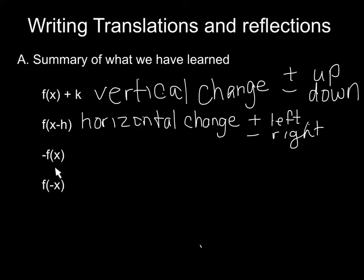The next thing we looked at is what happens when we multiply by a negative on the outside. When we multiplied by a negative, it made the function upside down. If we take the whole function and multiply by a negative, it's going to reflect it over the x-axis.